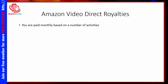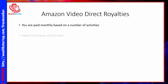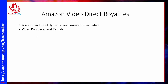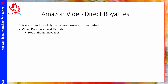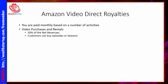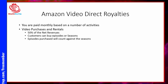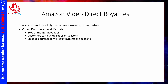You are going to be paid monthly based on a number of different activities. First, you're going to be paid for video purchases and rentals — specifically 50% of the net revenues of purchases and rentals. Customers can buy episodes or seasons, and if they purchase a season after buying episodes, those purchases count toward the season at a discount.